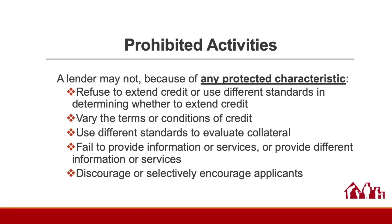For example, does the lender make assumptions about the creditworthiness of certain individuals based on protected classes? Take one real-world example. In 2016, the federal government brought a charge against Bank of America based on disparate treatment of white and Hispanic testers. Much of the discriminatory conduct was not overt, but rather incidental things like whether and how quickly the loan officer called the customer back, or how effectively the loan officer pursued or didn't pursue the customer, and how much useful information the loan officer provided the customer. That matter cost Bank of America several hundreds of thousands of dollars in settlement.